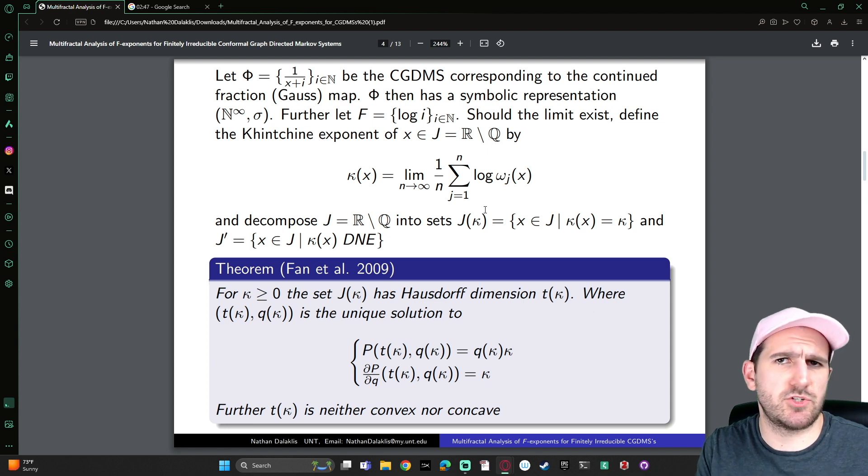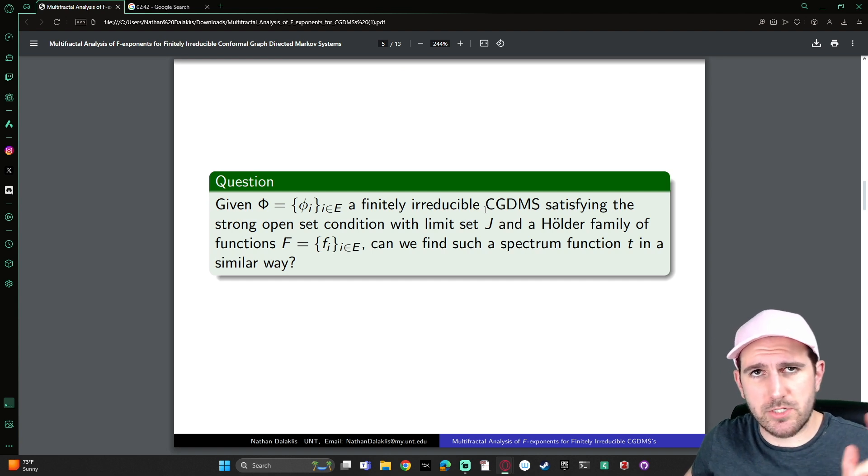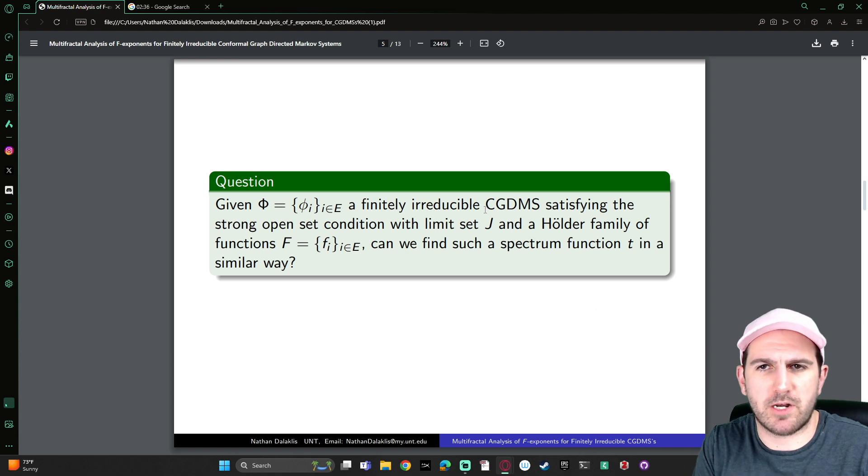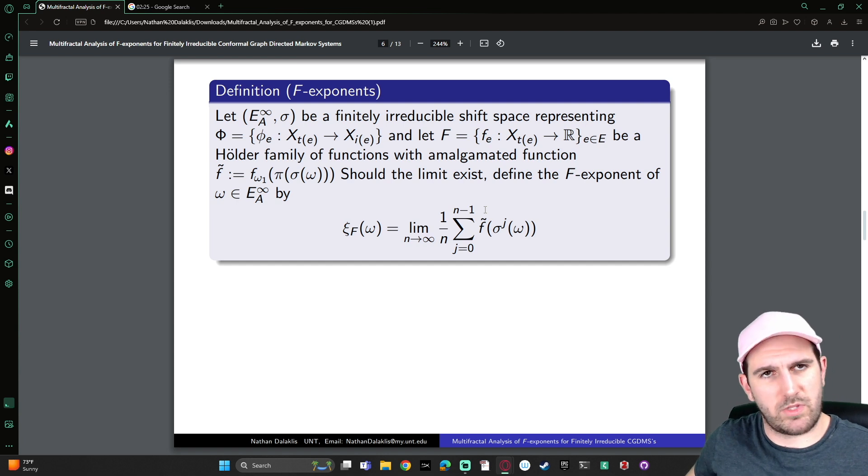And it has an interesting shape. It's neither convex nor concave. And so, my dissertation question was to go ahead and say, given a finitely irreducible conformal graph-directed Markov system satisfying the strong open set condition with a limit set J and a Holder family of functions F, can we find a spectrum function T in a similar way? Before I tell you the answer is yes, under certain stipulations, I should first tell you what an F exponent is.